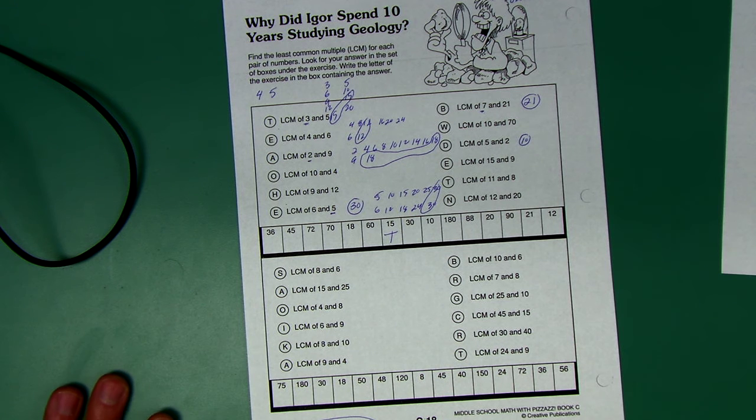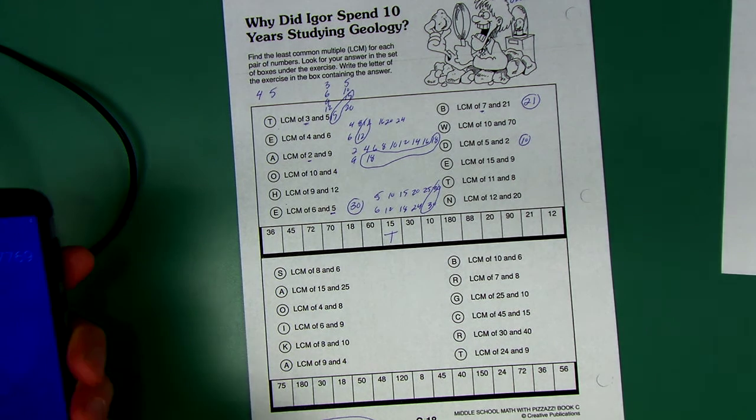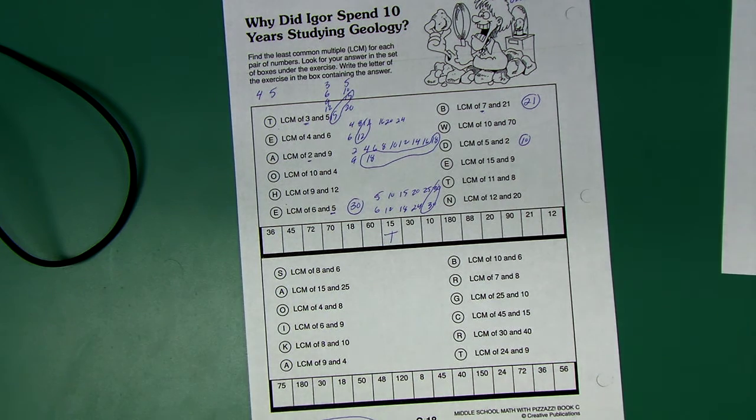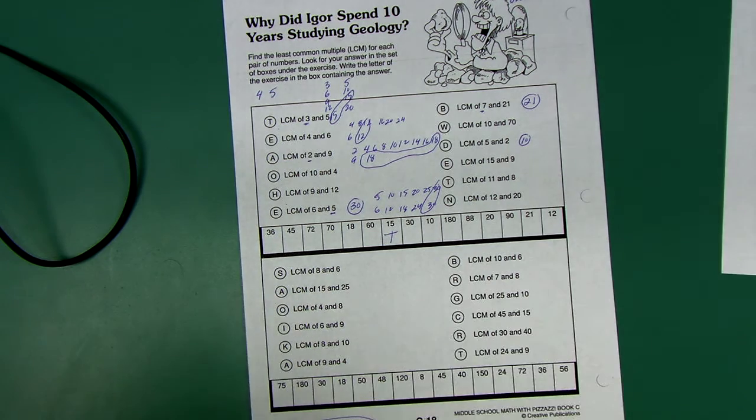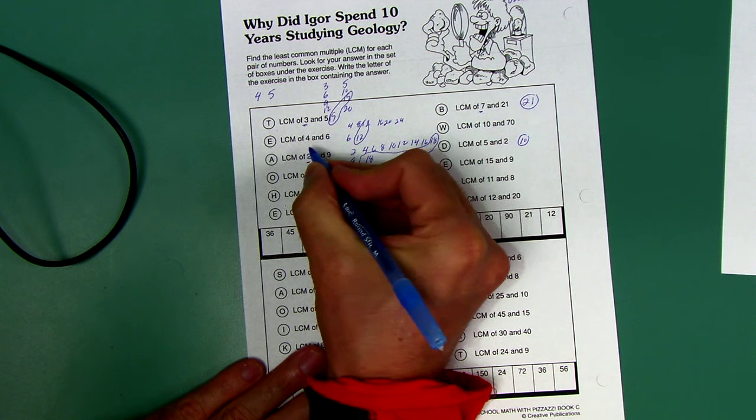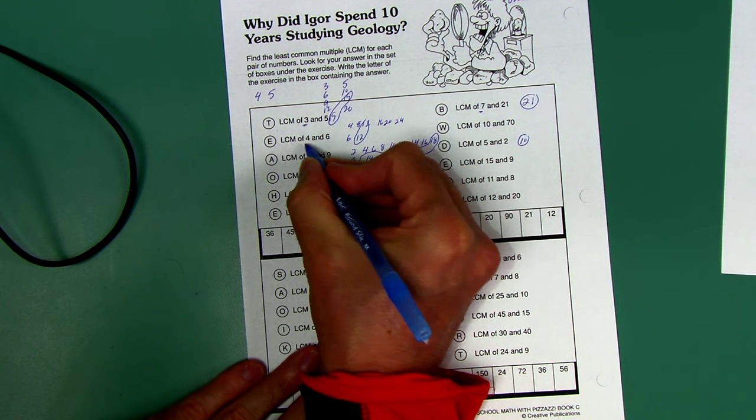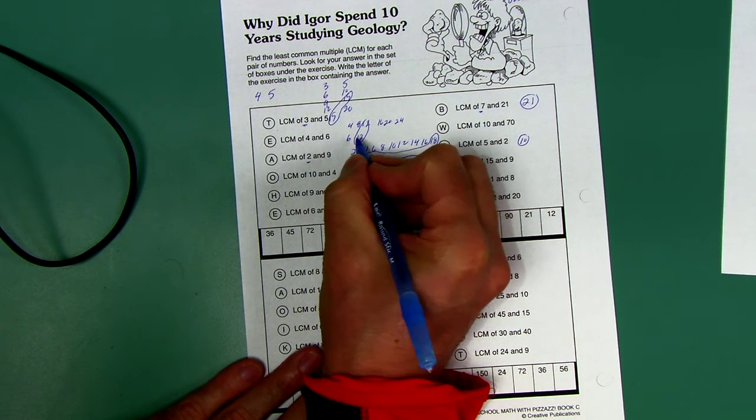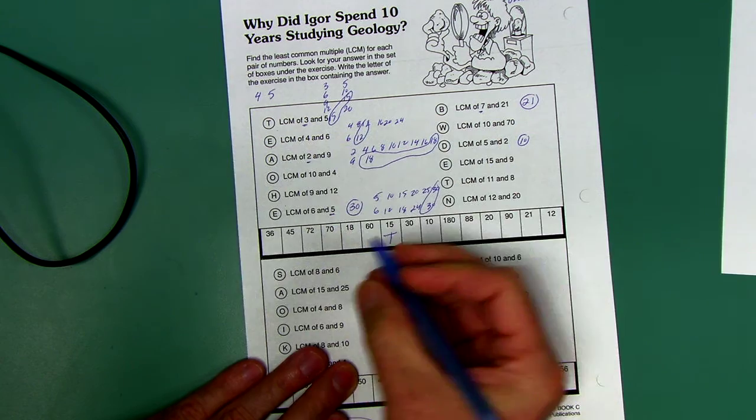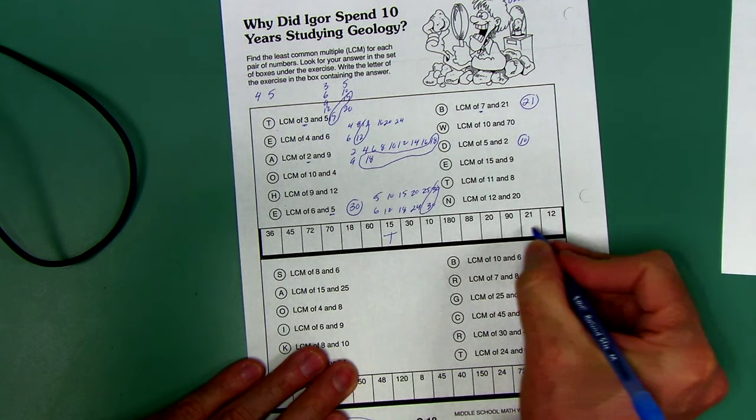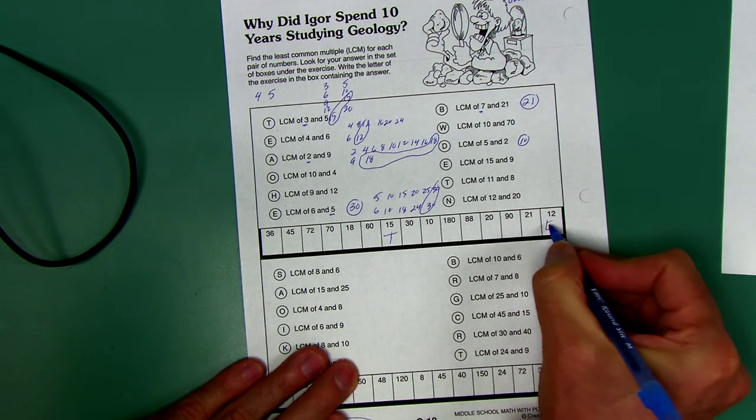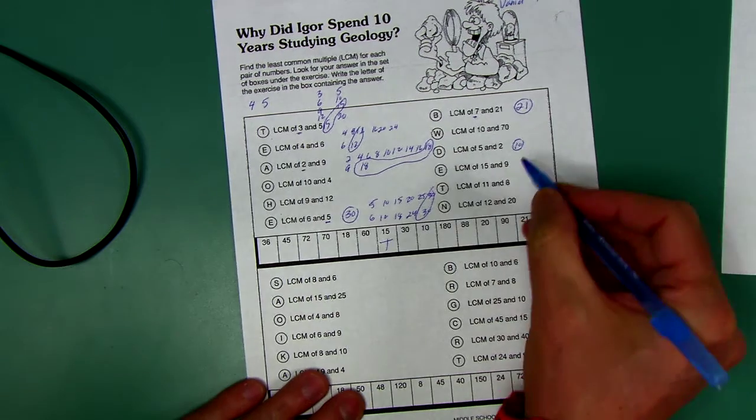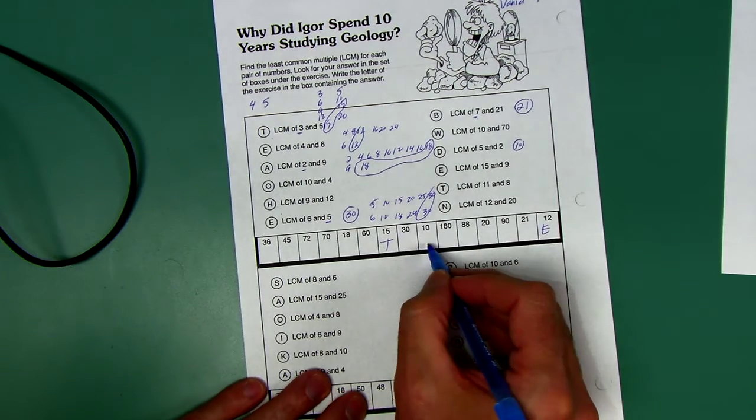You want to do that. Sorry, my phone's going off here. Same thing here: I found that the least common multiple of four and six was 12, so I'm looking for 12, it's going to be an E. They are a little bit nice to you because all the answers up here are going to be here, all the answers down here will be here.